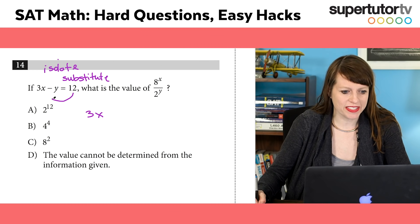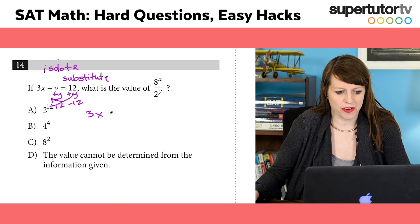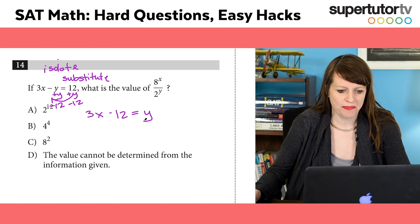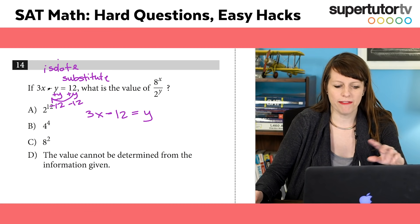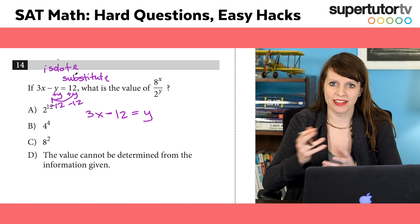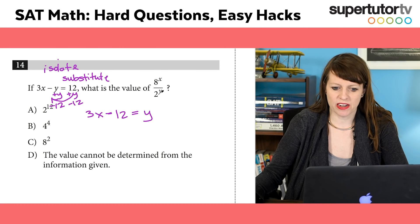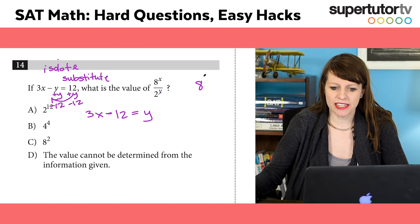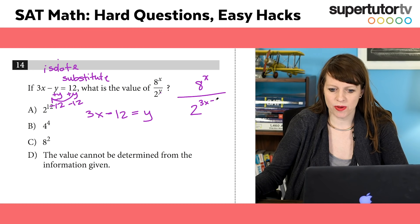I'm going to subtract the 12 from this side and then add the y to the other side. I'm adding y and subtracting 12. So I get 3x minus 12 equals y. That's just basic algebra - I add the y, I subtract the 12, kind of like switching sides and switching signs. So we get 3x minus 12 is y. And then all I have to do is plug that in right here.